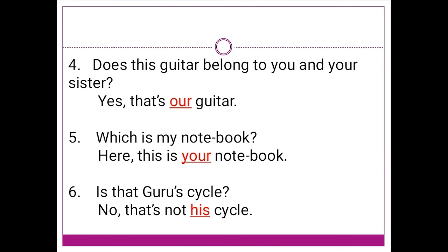Number 4: Does this guitar belong to you and your sister? Yes, this is dash guitar. Since the question is being asked to you and your sister, we will use our. Number 5: Which is my notebook? This is dash notebook — so here the answer will be your.